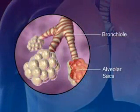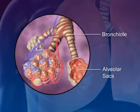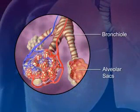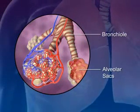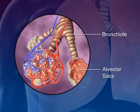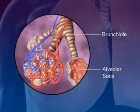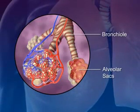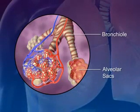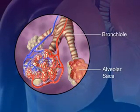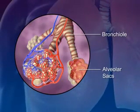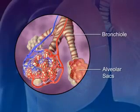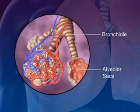At the end of each bronchiole are the alveolar sacs. The alveolar sacs are surrounded by blood capillaries and contain millions of single-layer alveoli cells where the gas exchange takes place.